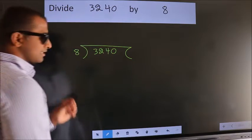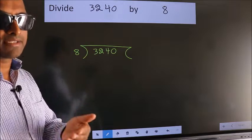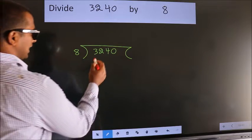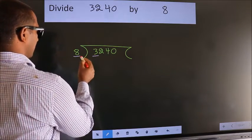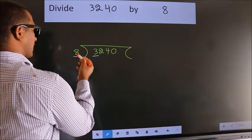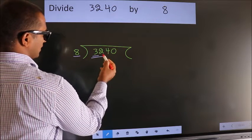This is your step 1. Next, here we have 3. Here 8. 3 is smaller than 8, so we should take two numbers: 32.